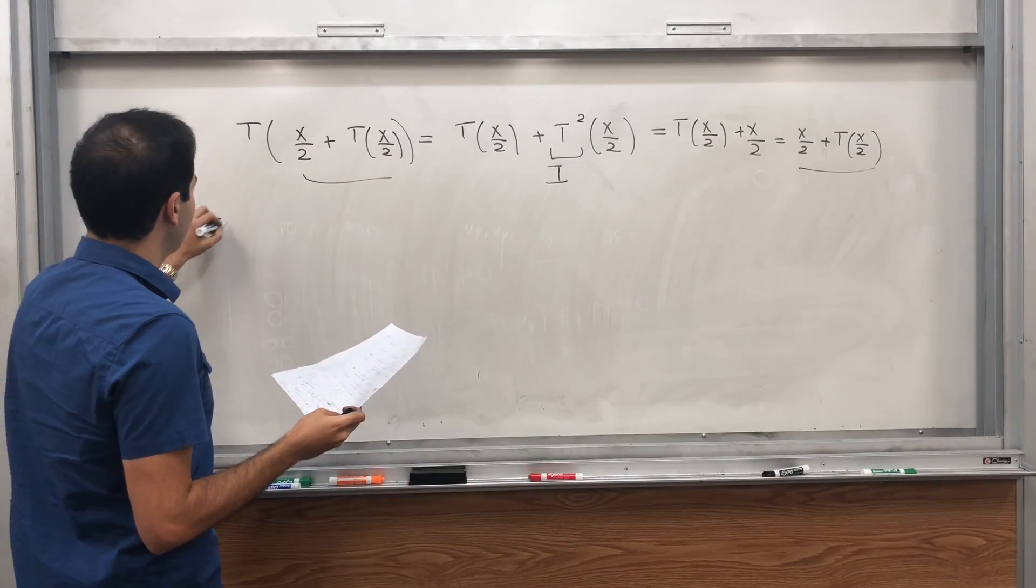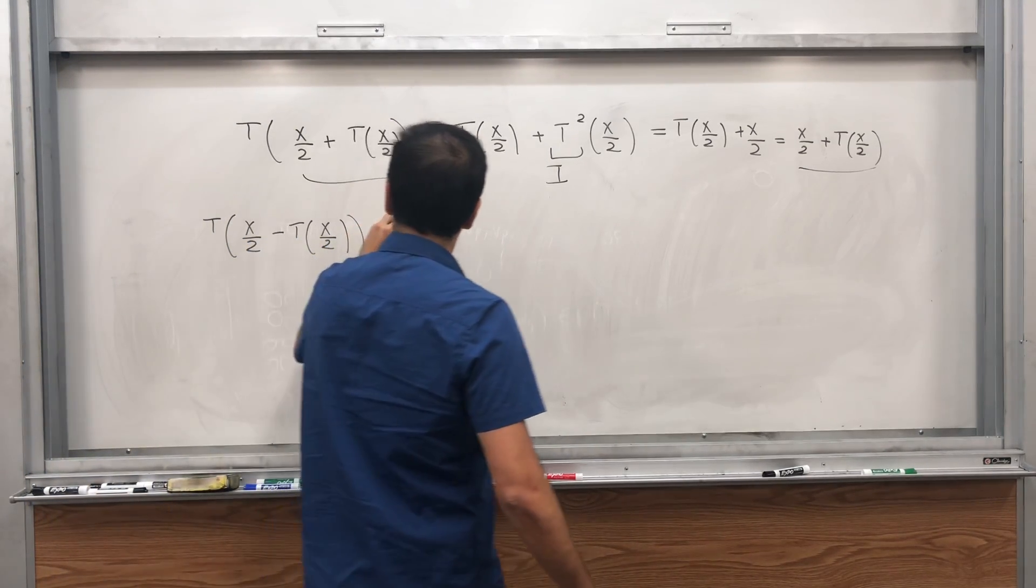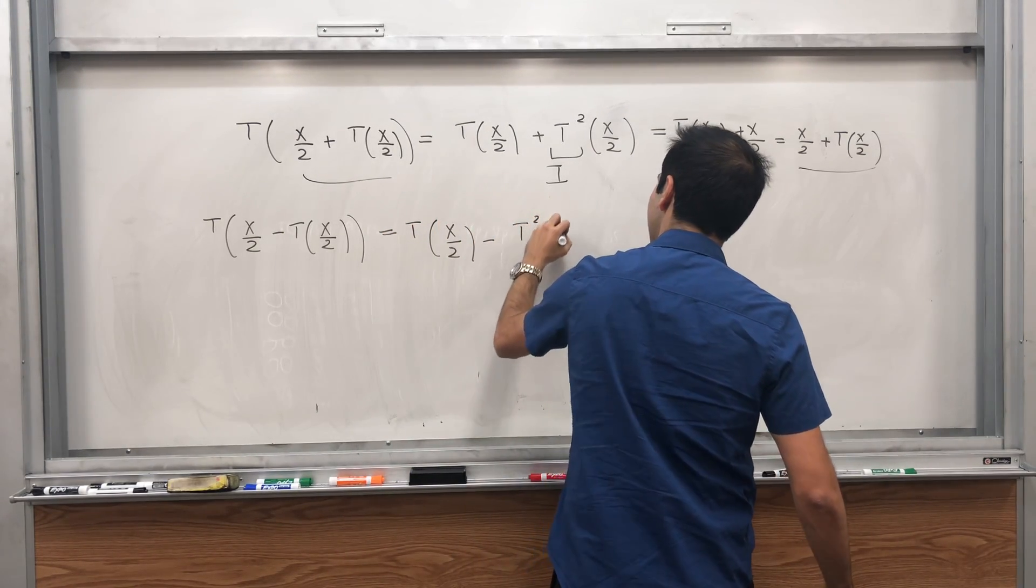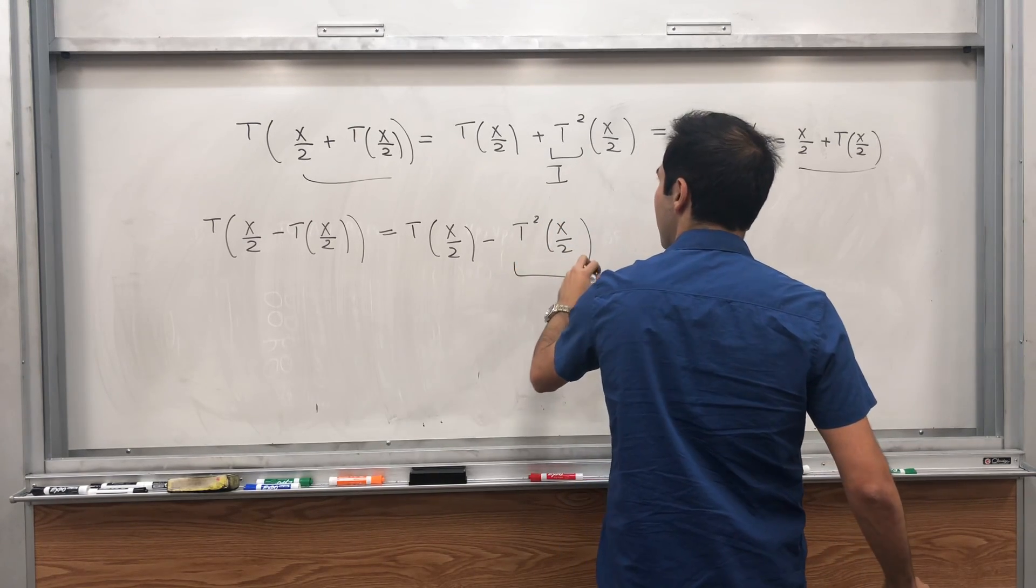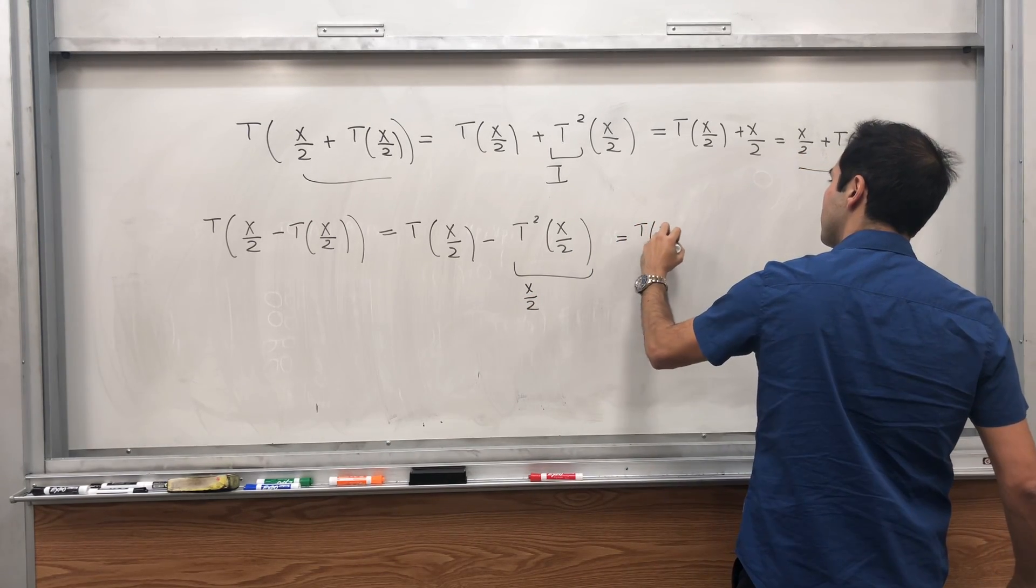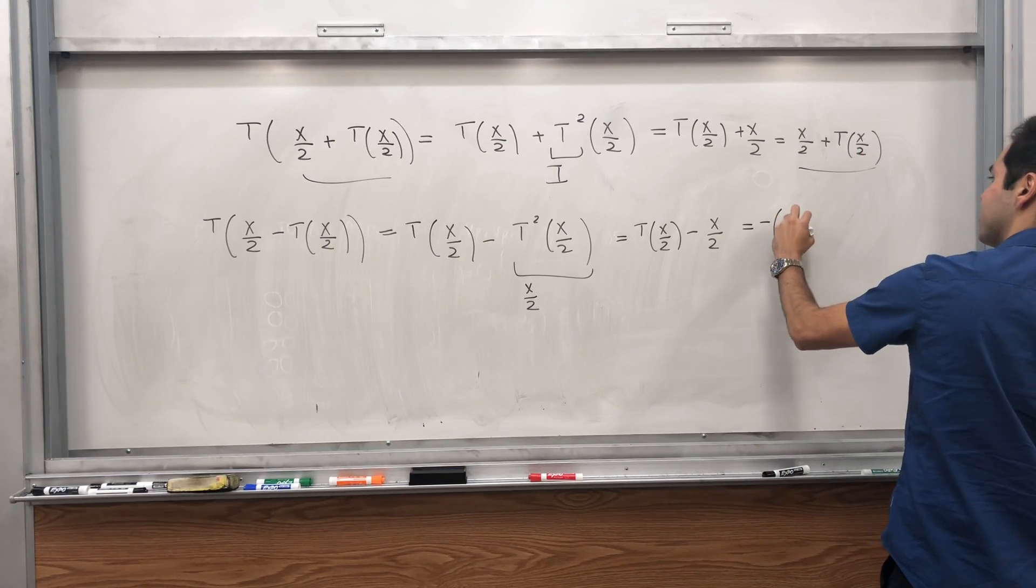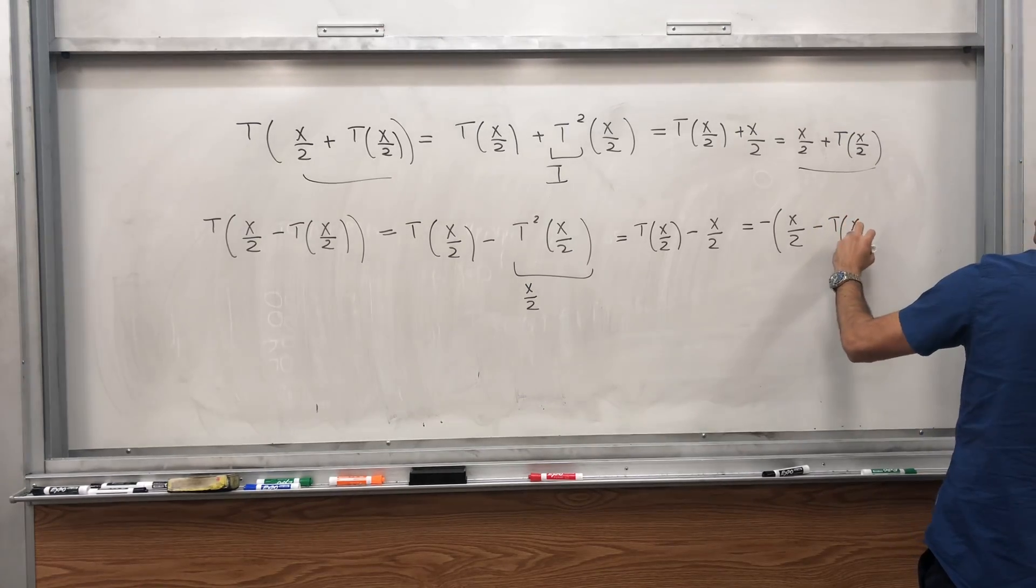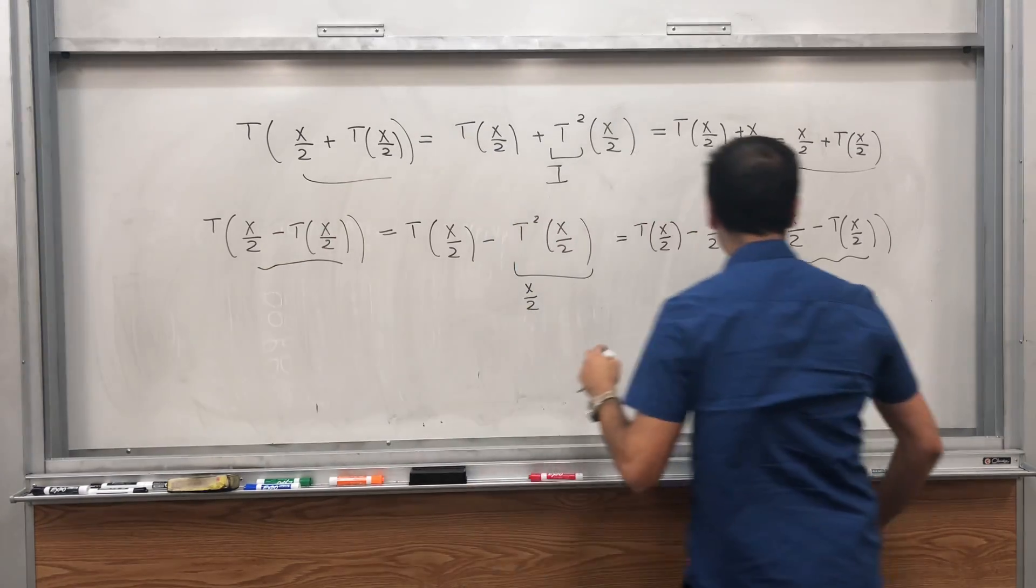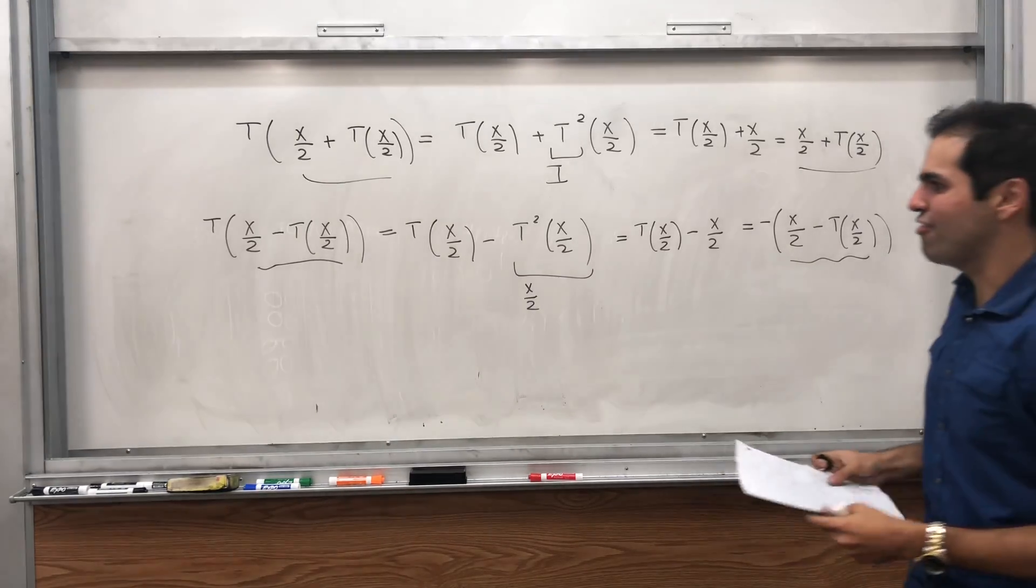On the other hand, let's calculate this other vector, T of x over 2 minus T(x) over 2. That is T(x) over 2 minus T squared of x over 2. But remember this is the identity, so this is x over 2. So this is T(x) over 2 minus x over 2, and that's precisely the opposite of our vector, so minus x over 2 minus T(x) over 2. So you see T takes this vector as its input and spits out its opposite, so it is in the anti-fixed point space F minus.